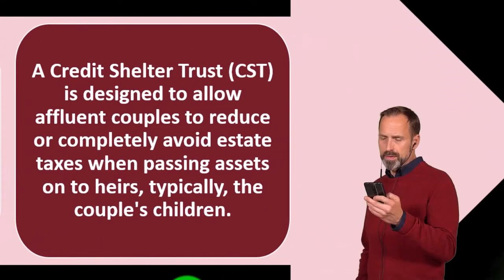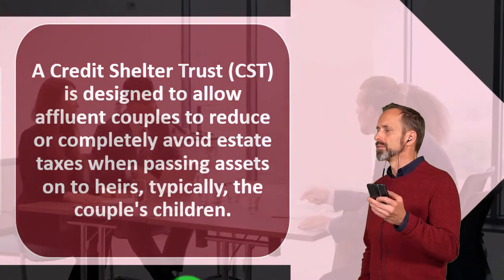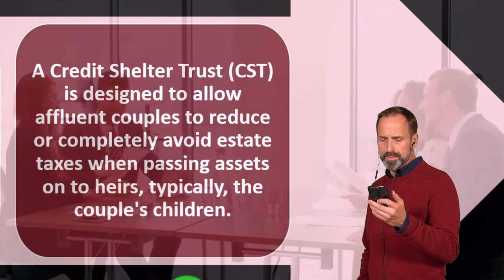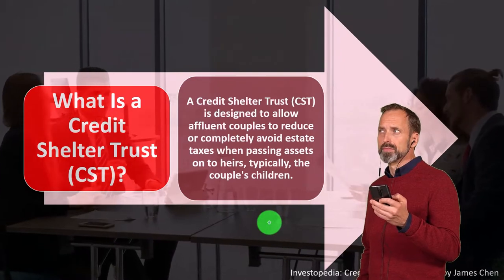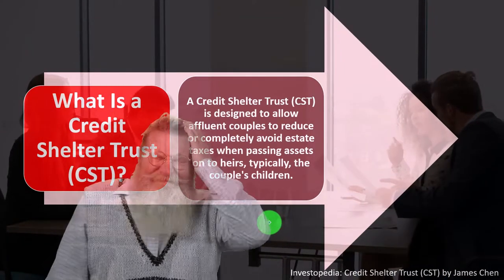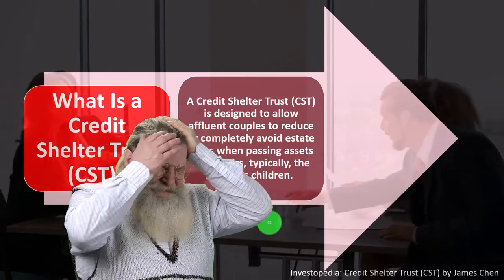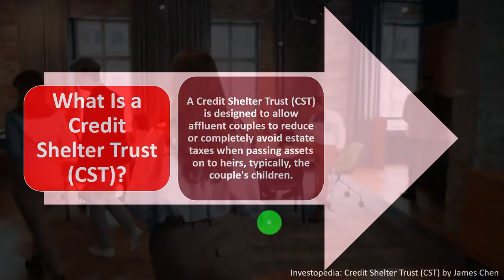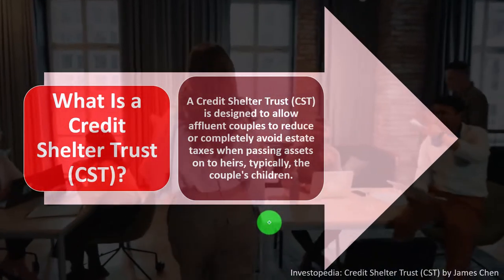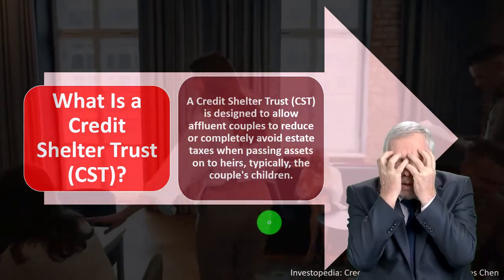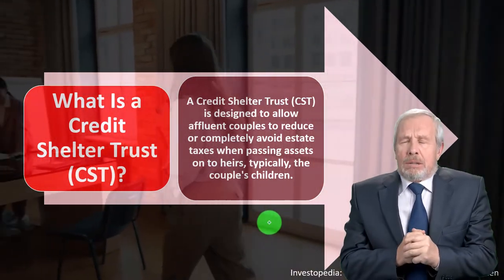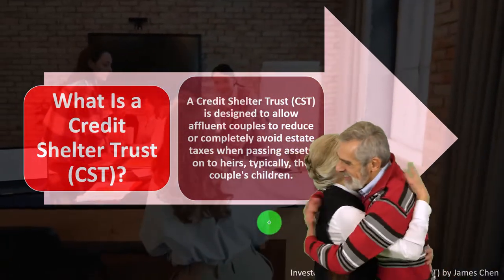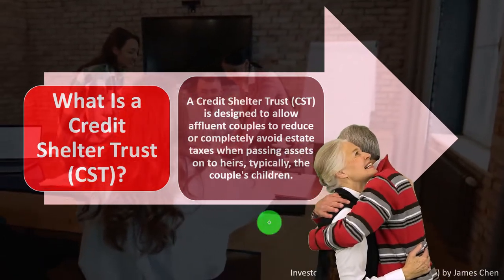A Credit Shelter Trust (CST) is designed to allow affluent couples to reduce or completely avoid estate taxes when passing assets to heirs, typically the couple's children. As a quick recap from prior presentations: before the time of death, our goals are to allocate assets in accordance with our wishes, make the process easy on our heirs, and if we have significant assets, to lower the amount of taxes being paid — so more money goes to the people we want to give it to.